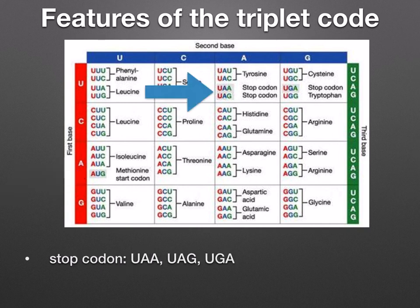Three codons — UAA, UAG, and UGA — do not code for any amino acids. These are called stop codes and mark the end of a polypeptide chain. They act in much the same way as a full stop at the end of a sentence.